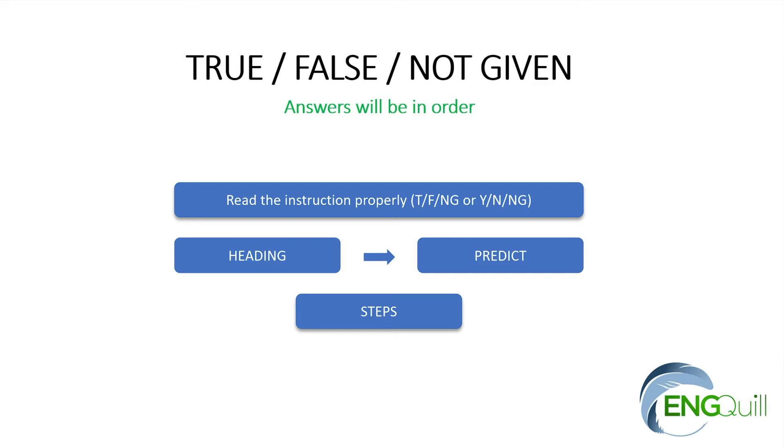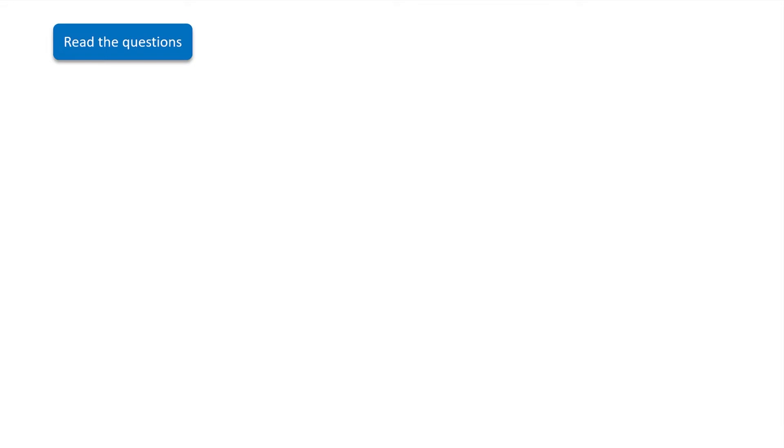Next, let's look at the steps for how to answer True, False and Not Given questions. The first step is to read the questions — you are not reading the passage yet. When you get the question paper and see True, False, Not Given questions, first read the heading or subheading and predict what the passage could be about. Then go to the question and read the questions first. After that, you are going to take the keywords out and highlight them — very, very important.